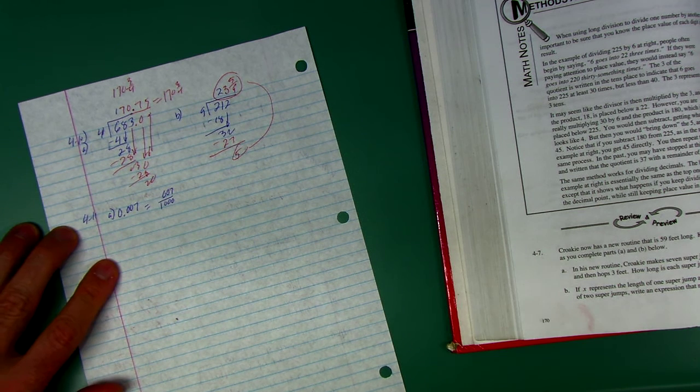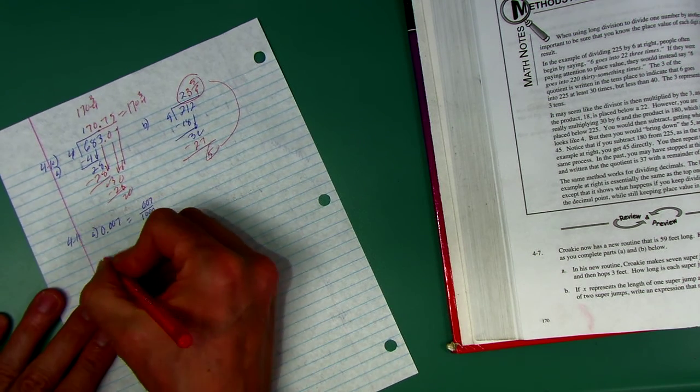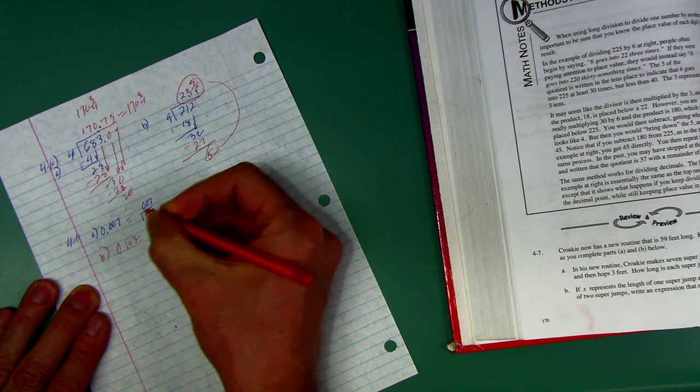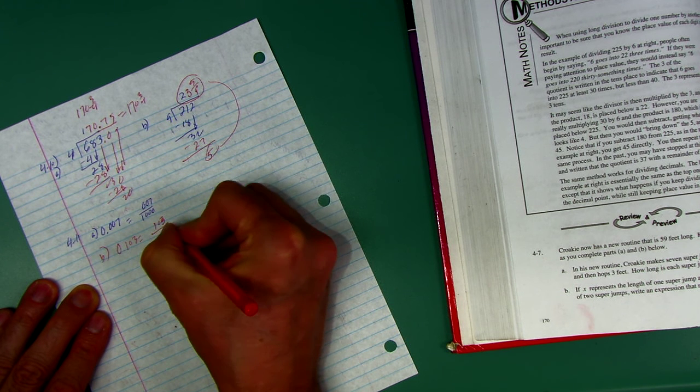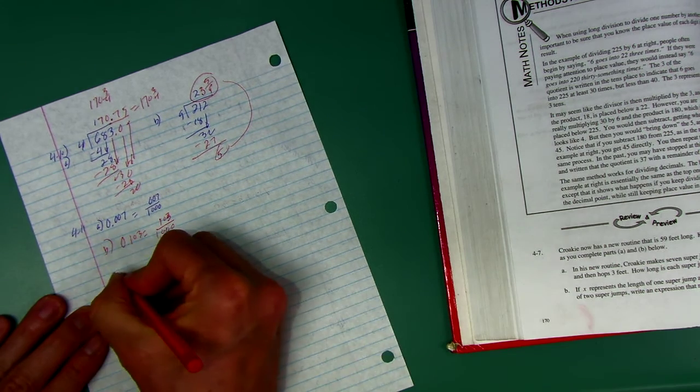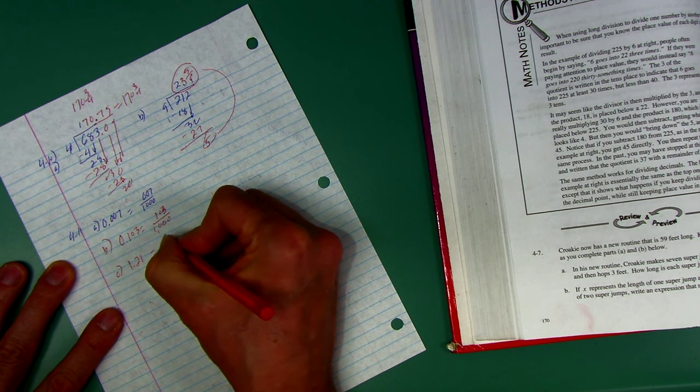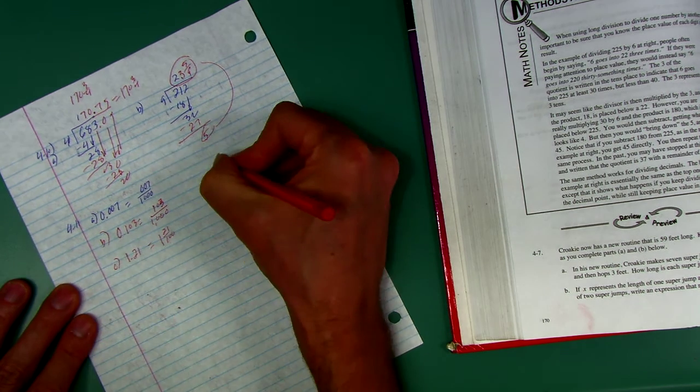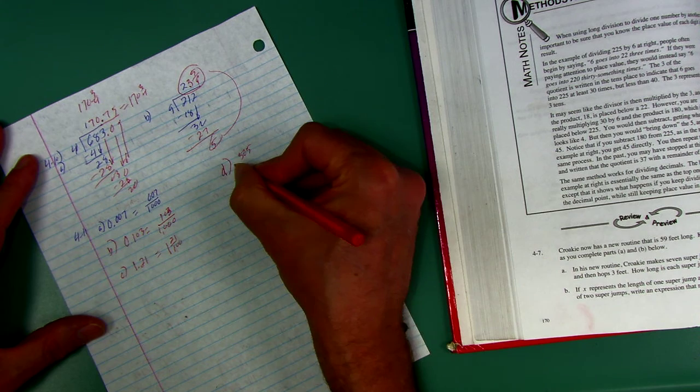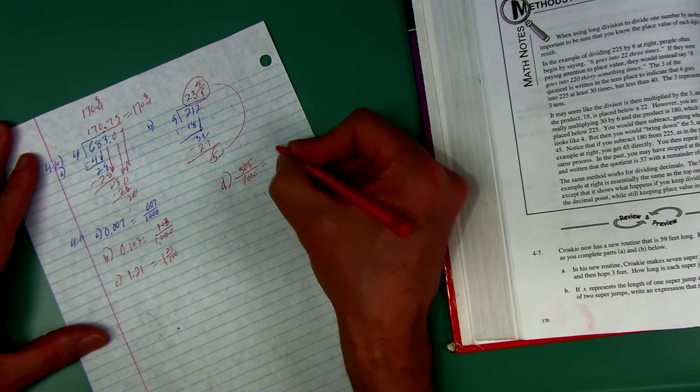Four dash eleven, I have to rewrite these decimals as fractions, and fractions as decimals. We already did the first one. On B, I got 0.103, what is that? That's 103, put zeros underneath each of them, so 103 three-thousandths. C, I have a decimal, 1 and 21 hundredths. Can I simplify any of these?